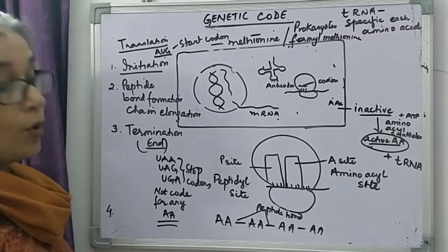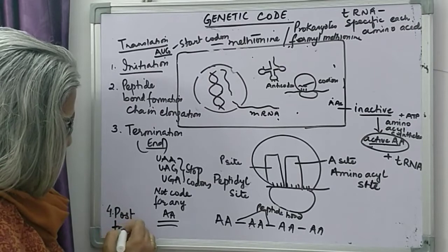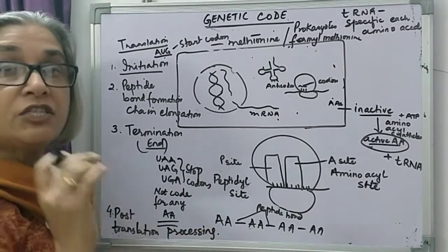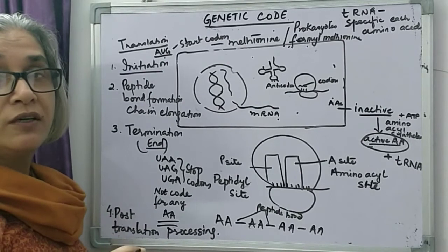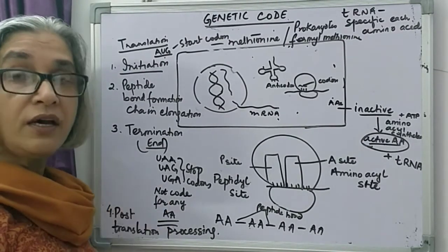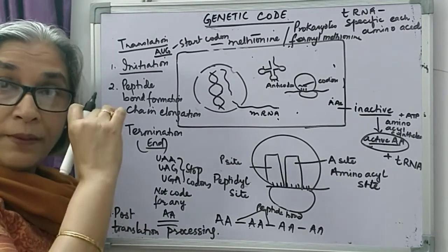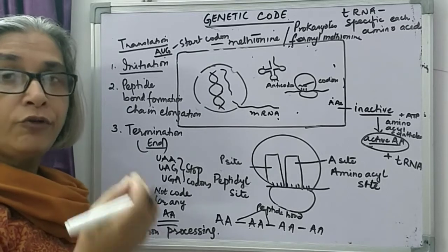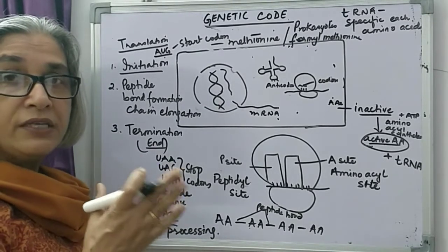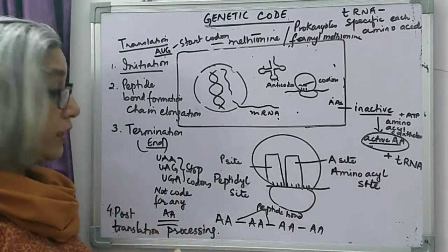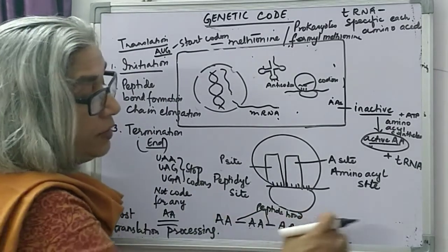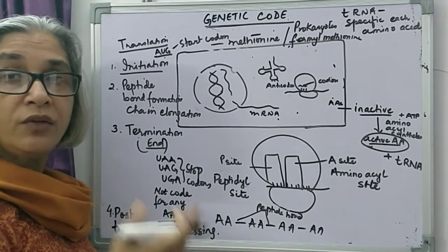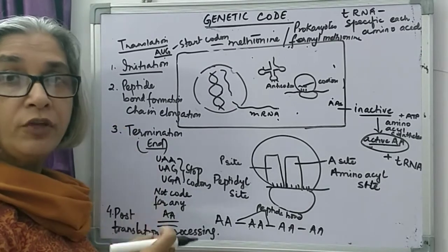The fourth step is post-translational processing — that is, after protein synthesis has taken place, the processing that will occur to give a final structure to the protein produced. This occurs in the endoplasmic reticulum and the Golgi complex, where the primary structure of the protein is converted into secondary, tertiary, and quaternary structure through folding and bond formation. The polypeptide chain formed after the first three steps is not active until it undergoes post-translational processing, after which it attains a certain configuration and structure.